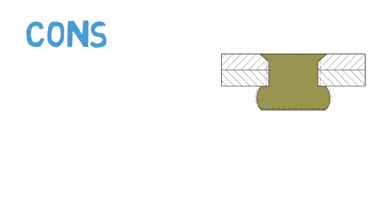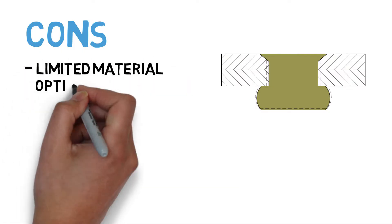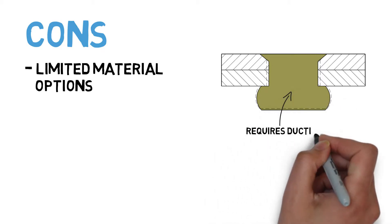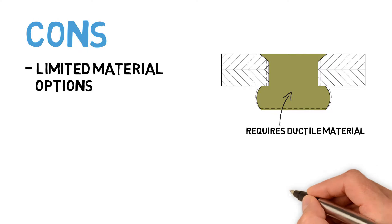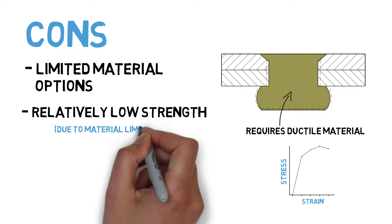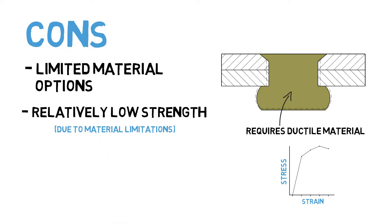Rivets also have some additional performance benefits that we will look at momentarily, but let's first discuss some of the cons of riveting. The range of materials that can be used for rivets is rather limited. Because riveting relies on plastically deforming the fastener itself, we are limited to lower strength and highly ductile materials. As a result, rivets tend to be significantly weaker than threaded fasteners, limiting their use in certain applications.